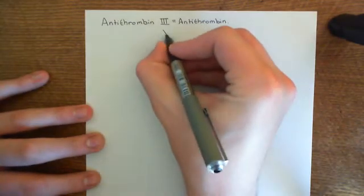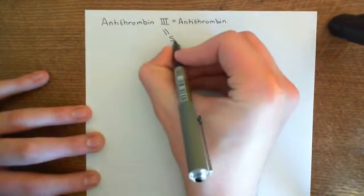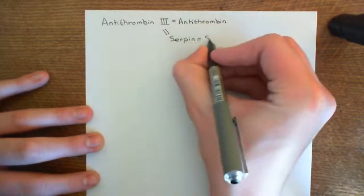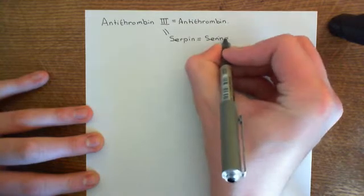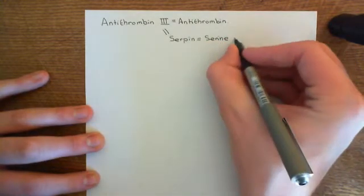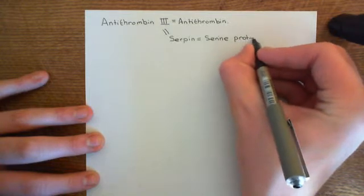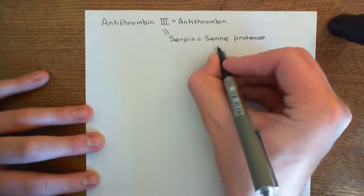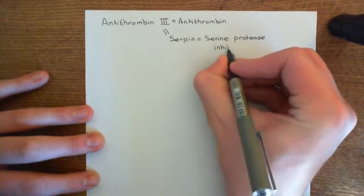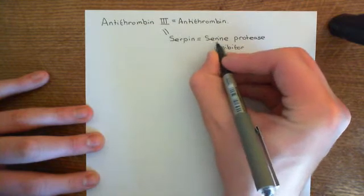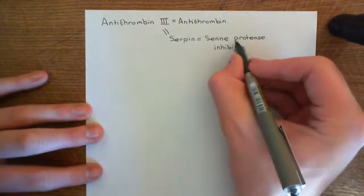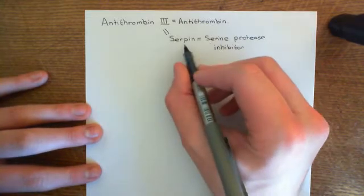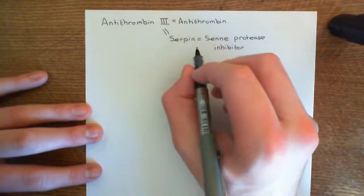Antithrombin-III is what is known as a serpin, which stands for serine protease inhibitor. This is because most of the enzymes involved in the coagulation cascade are serine proteases, and a serpin is a protein that inhibits serine proteases. They took SER from serine, P from protease, and IN from inhibitor to get serpin. Antithrombin-III is an example of a serpin.